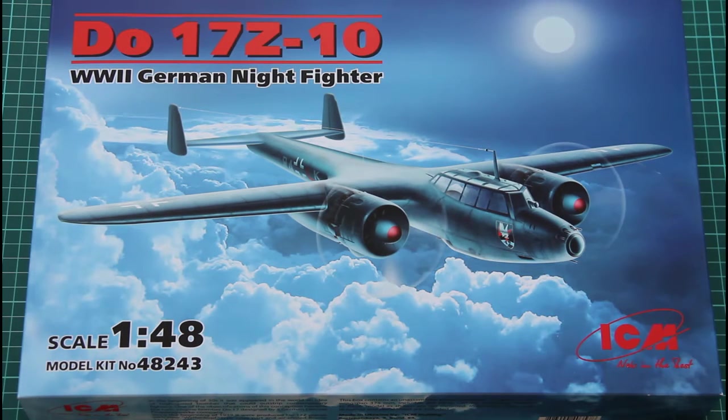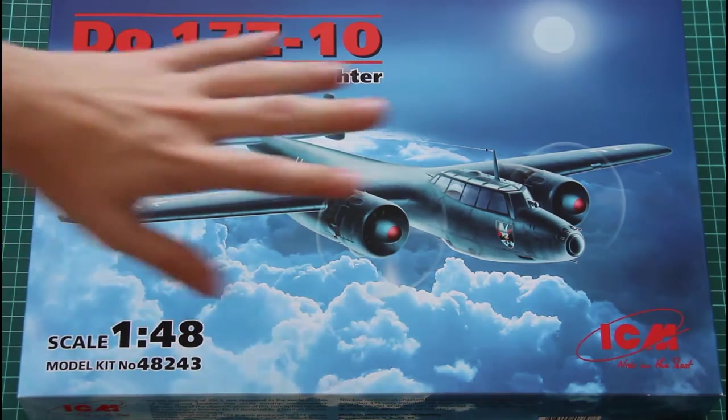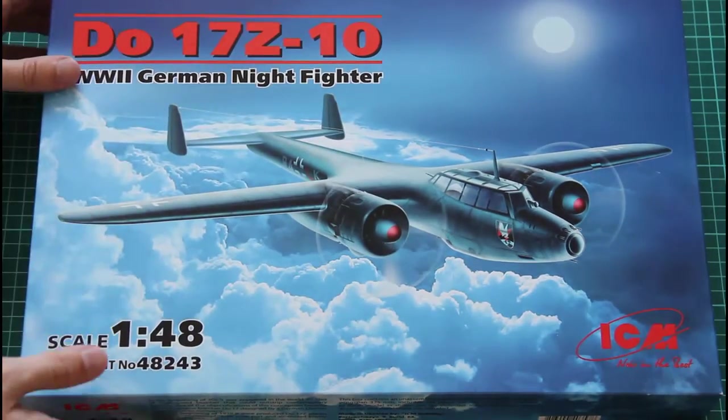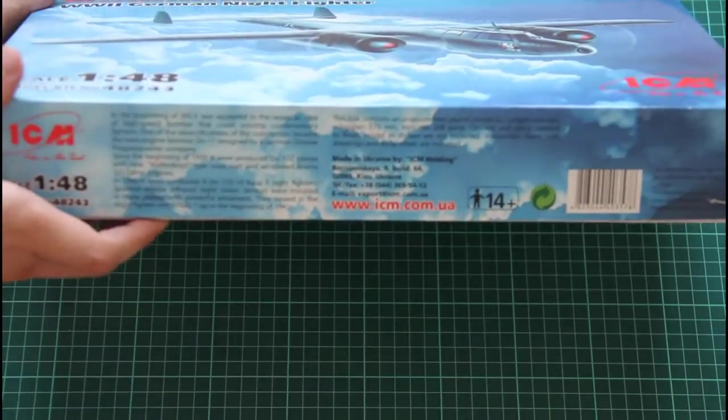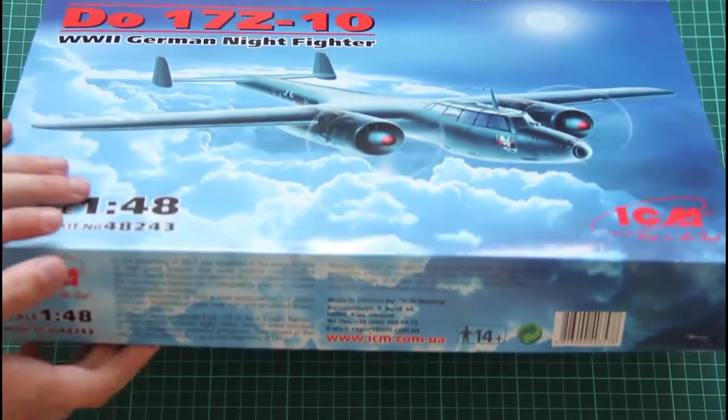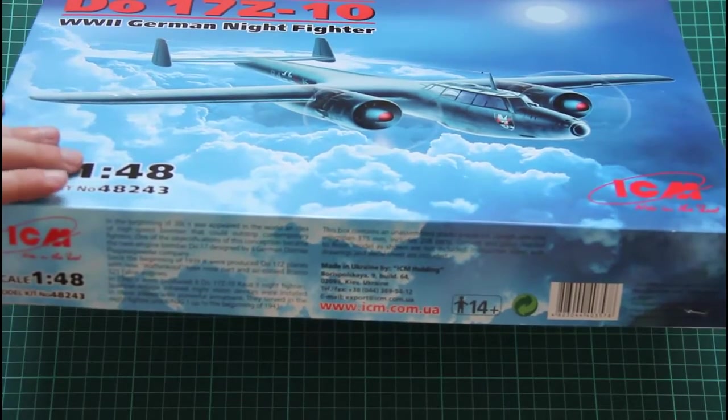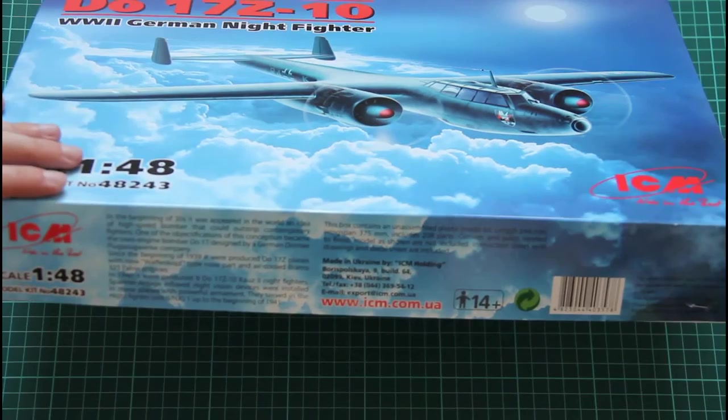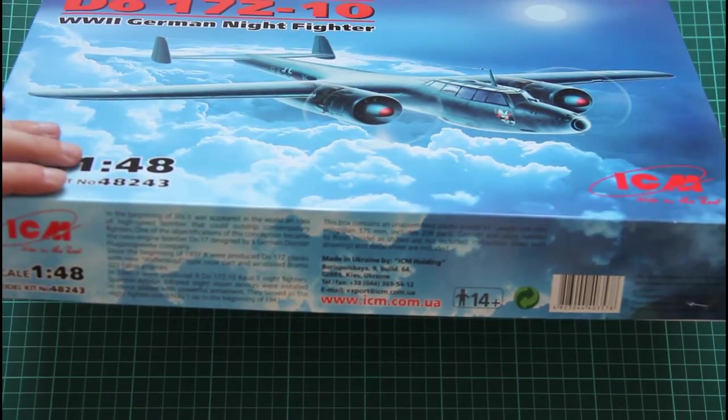This kit is molded in 1/48 scale and as you can see it's packed into a quite huge box. Here you can see comparison with my hand. We have this nice box art on the top, then some information about the kit. The assembled kit will measure 34 cm length and wingspan equal to 37 cm.